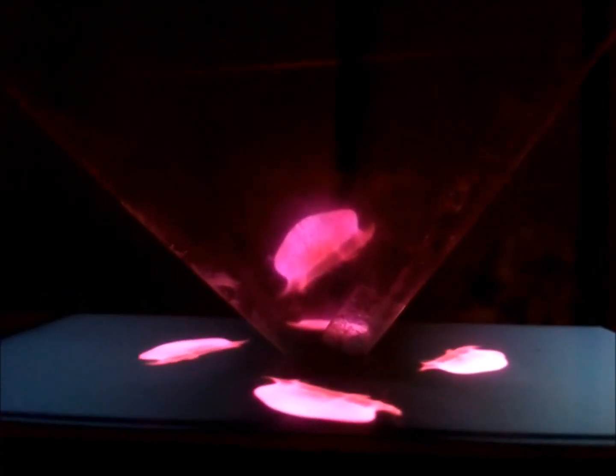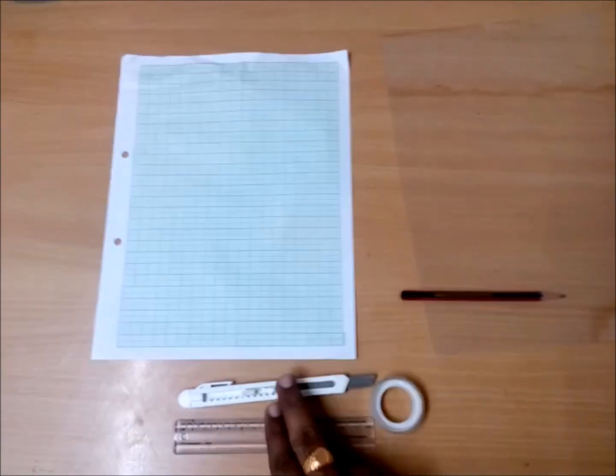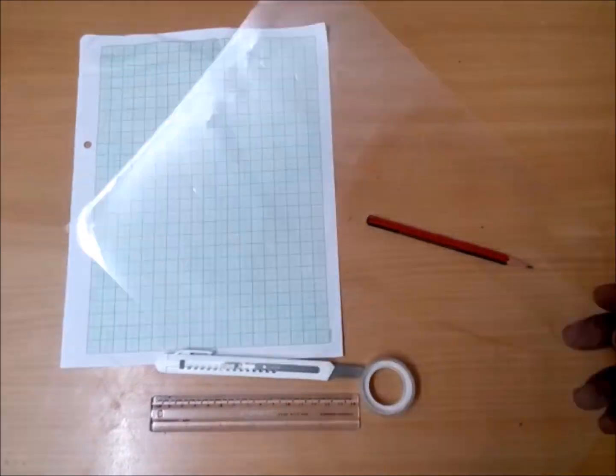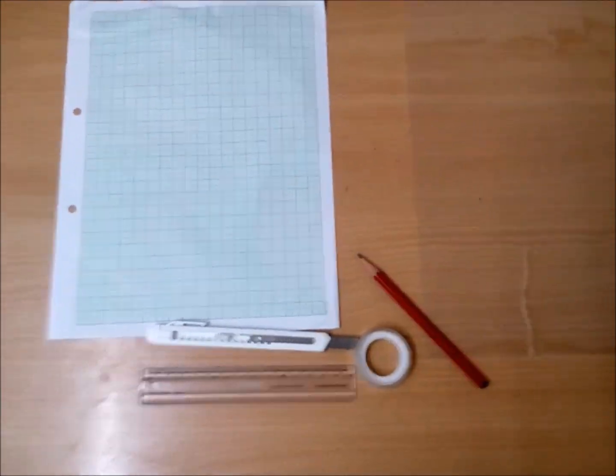Hi friends, welcome to my channel Funny Science. Today I'm going to show you how to make a 3D hologram for your Android phone. To make a 3D hologram we need a cutter, scale, transparent insulation tape, a graph paper, and a transparent sheet.